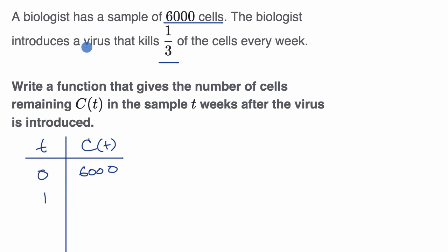Well, it says that the virus kills one third of the cells every week, which is another way of saying that two thirds of the cells are able to live for the next week. And so after one week, we're going to have 6,000 times two thirds. And then after two weeks, or another week goes by, we're gonna have two thirds of the number that we had after one week. So we're gonna have 6,000 times two thirds times two thirds, or we could just write that as two thirds squared.